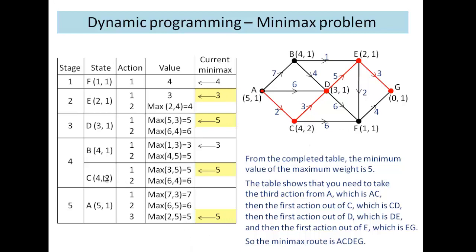If we look at any of these different nodes, we can see here that C, for example, has 3 followed by 5. Well, the 3 for action 1 is the weight of the arc for action 1, which is 3. We then go to D, which is where that takes us, and we pick out the current minimax from D, so that's the second value there.